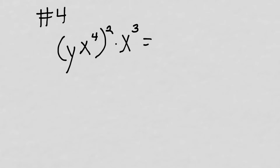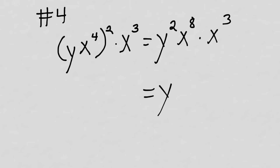We're up to number four. We've got yx to the fourth, the quantity squared, times x cubed. On these problems, you have to take care of what's inside the parentheses first — it's almost like distributing but we're dealing with an exponent. Y squared, then x to the fourth squared means we multiply exponents and get x to the eighth, times x to the third. We bring down the y squared and add exponents for the x to get x to the eleventh. The answer is D: y squared times x to the eleventh.